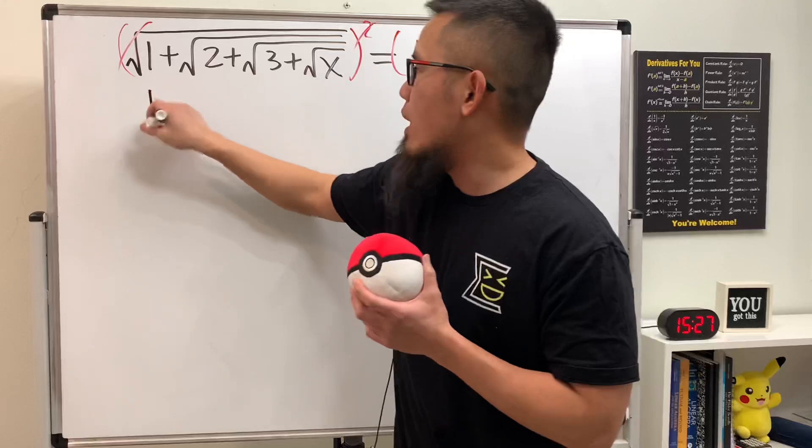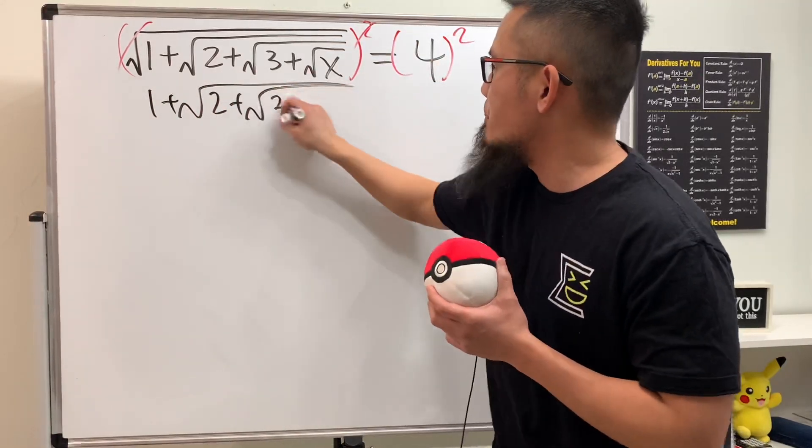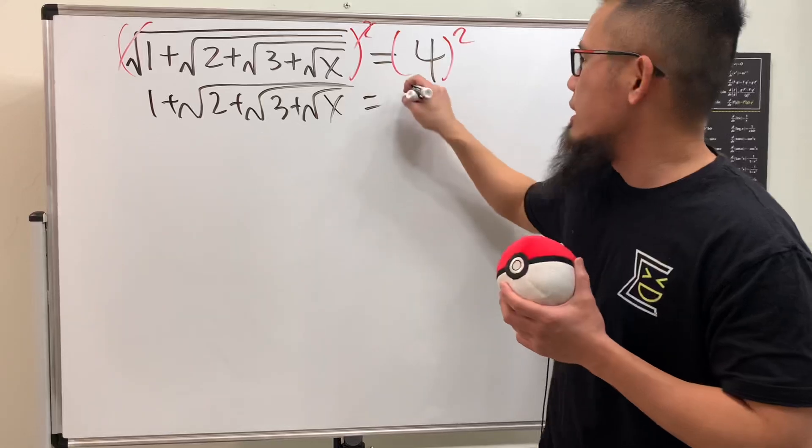We'll just get 1 plus the square root of 2 plus the square root of 3 plus the square root of x, and this is equal to 16.